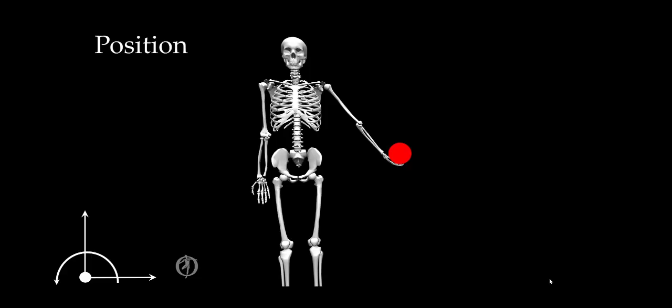Now let's talk about position. Position is the location in the frame of reference. Notice the red ball's position vector is from the origin to the center of the red ball—that's the linear position. The angular equivalent is the orientation within a frame of reference. That angle, denoted by theta, can either be to an external reference such as the horizontal, which is called a segment angle, or a reference to another segment, which is referred to as a joint angle.